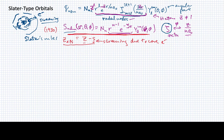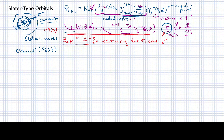Because the Slater orbitals are not the same as the hydrogen functions, the energy levels were not exact. But it occurred to later researchers that zeta could be used as a variational parameter. Clementi in the 1960s began using Slater orbitals with zeta as a variational parameter, optimizing its value to get results that were more consistent and more accurate.